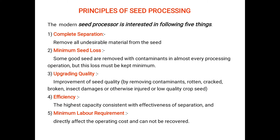Seed processing has five major steps. The first is complete separation, the second is minimum seed loss, the third is upgrading quality, the fourth is efficiency, and the fifth is minimum labor requirement. Complete separation means the removal of undesirable material from the seeds.